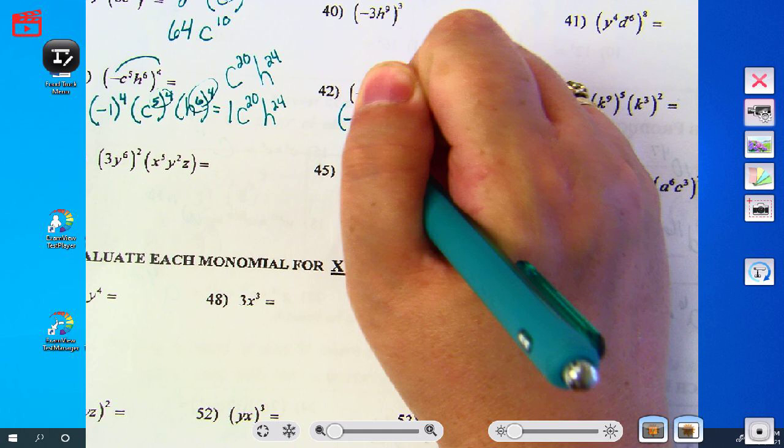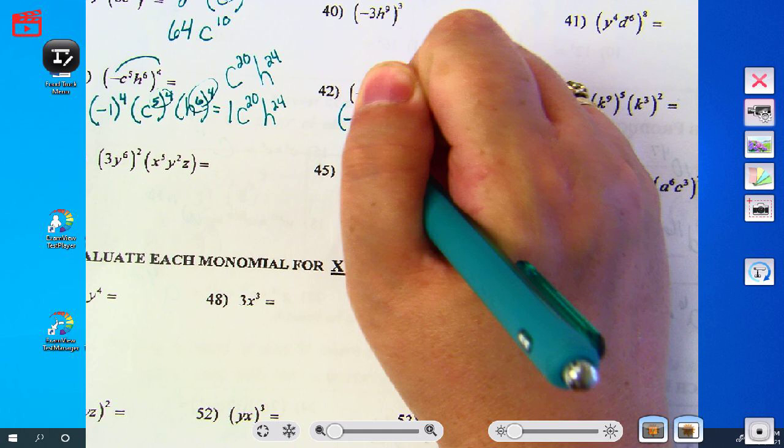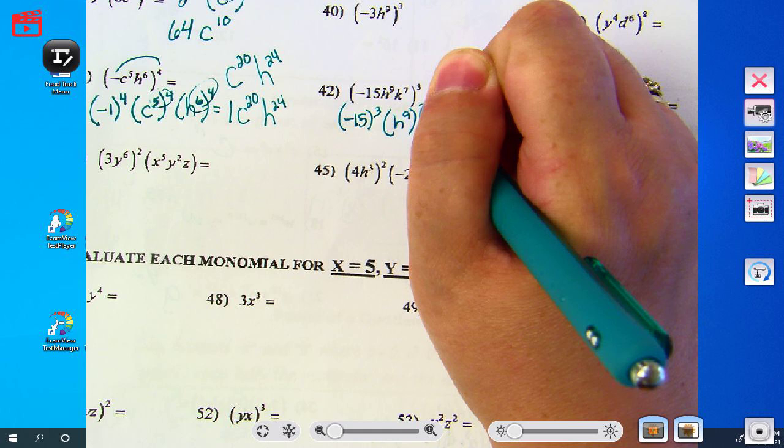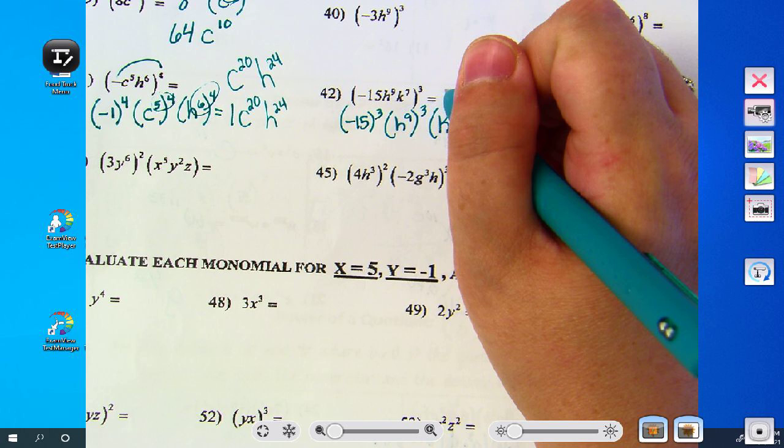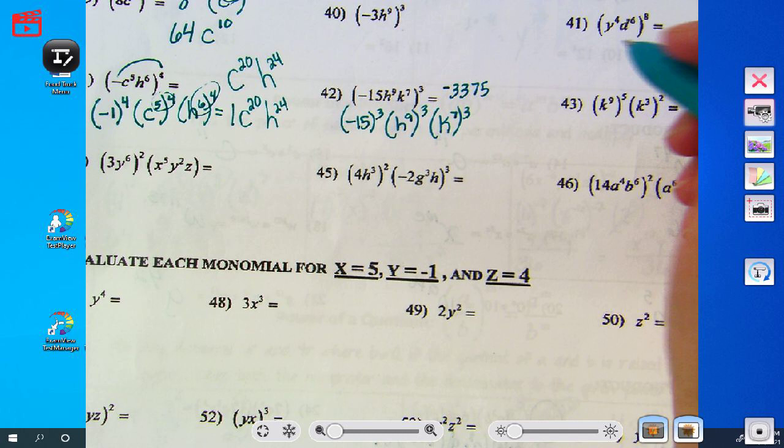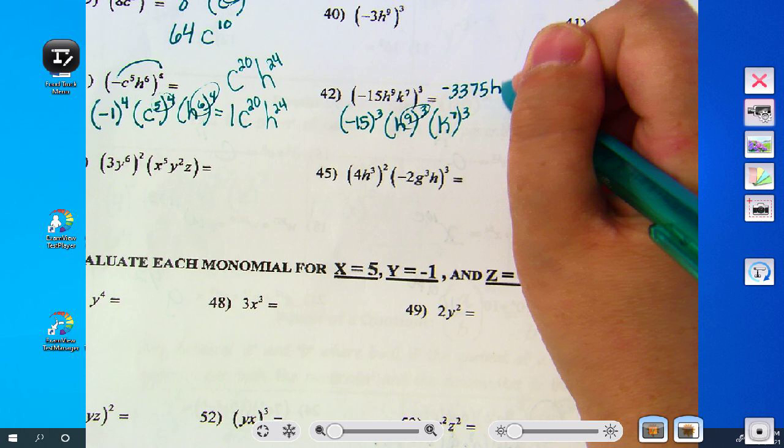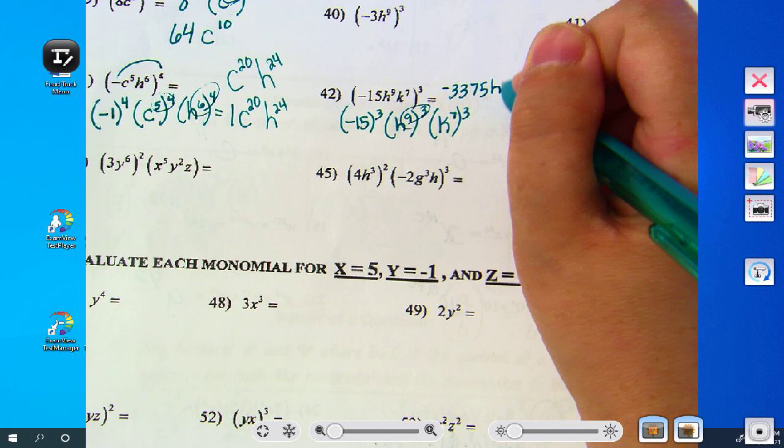So you have negative 15 to the 3rd, 8th to the 9th to the 3rd, K to the 7th to the 3rd. So what's negative 15 to the 3rd power? What'd you get, Caleb? Okay, so now you have 3,375. Now multiply to get 27 and multiply to get 21.